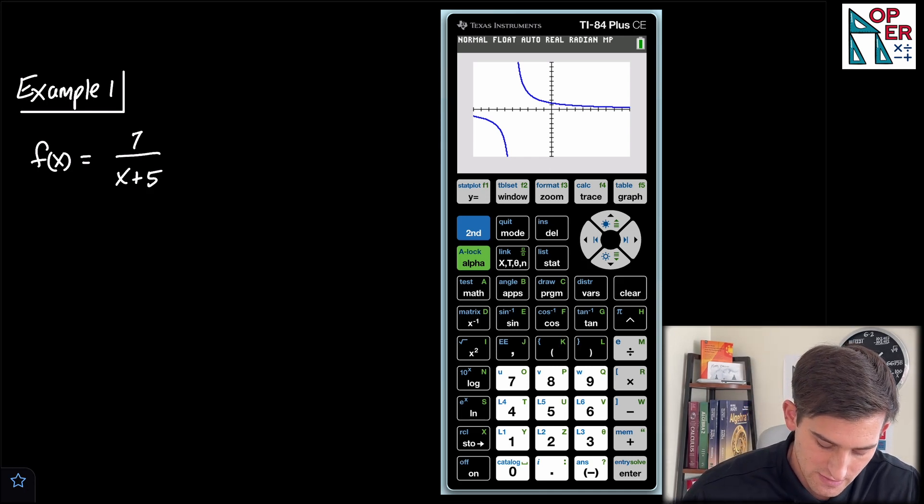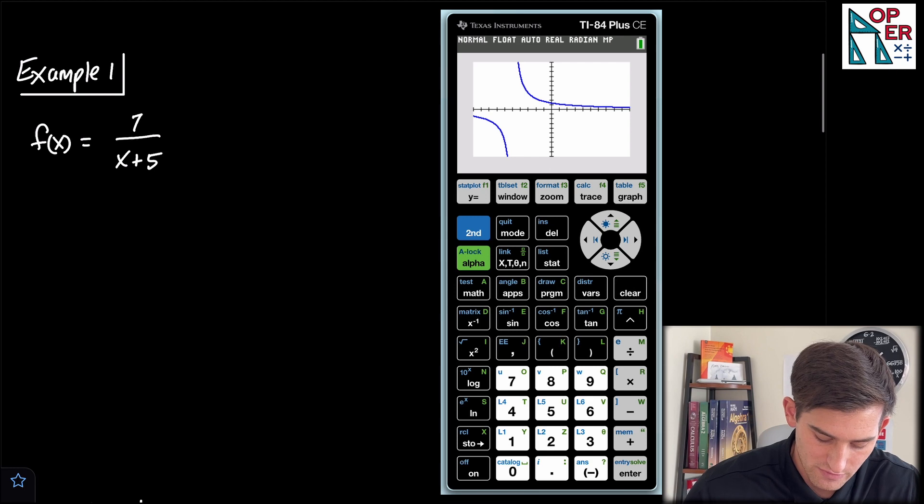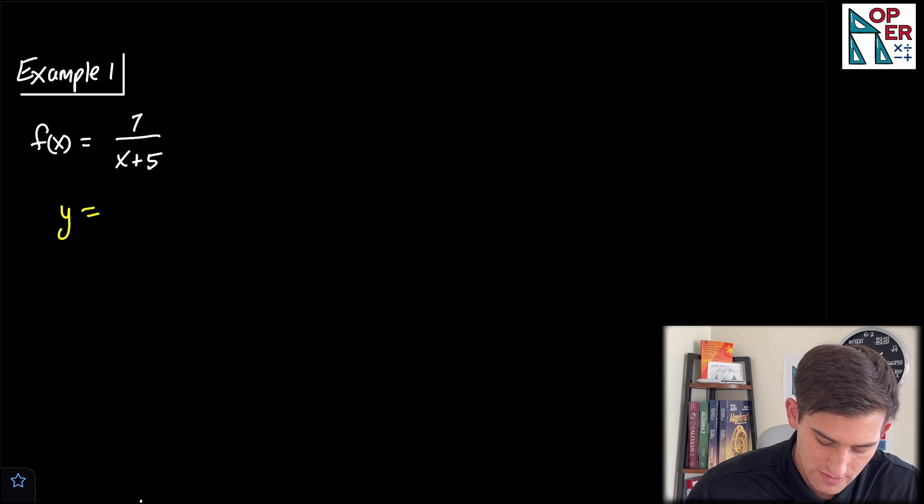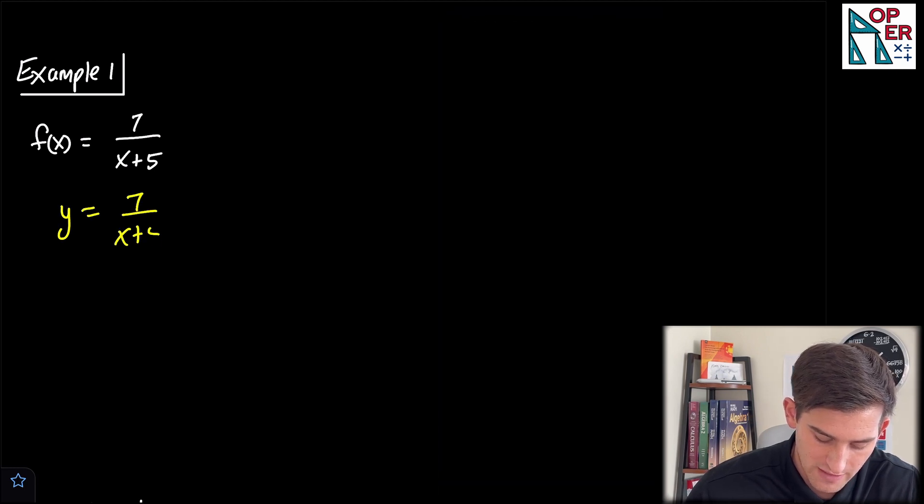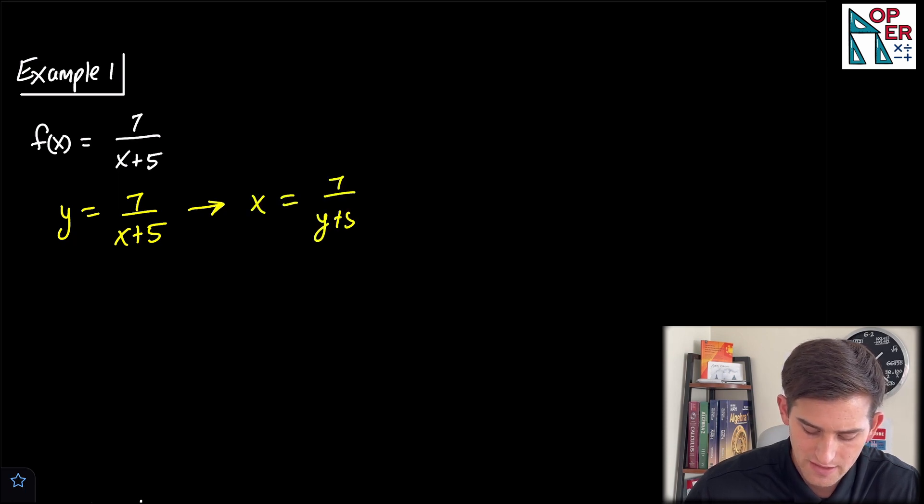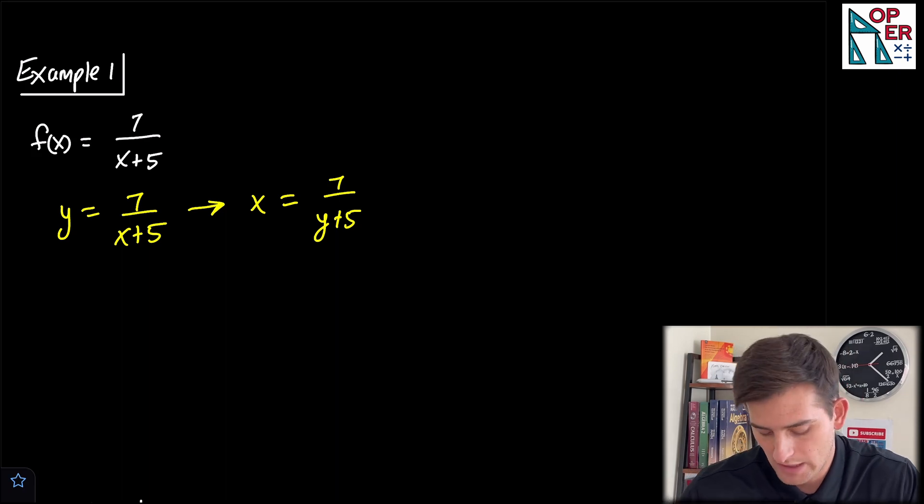Let's start off, and let's plug in, or let's rewrite this as y equals 7 over x plus 5. Now we can switch the roles of X and Y. So x equals 7 over y plus 5, and now let's just go ahead and solve for y.